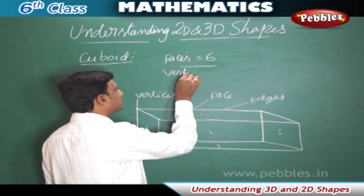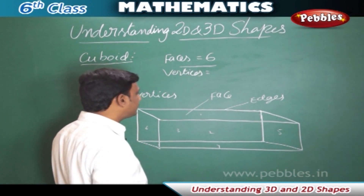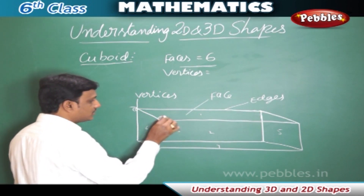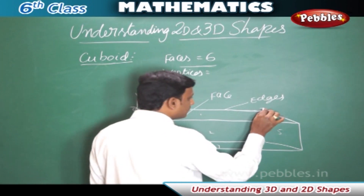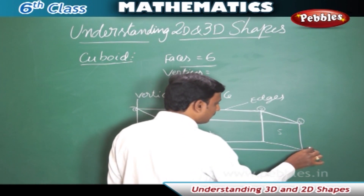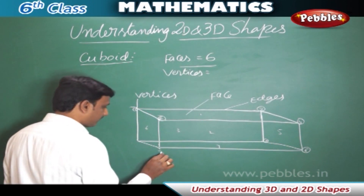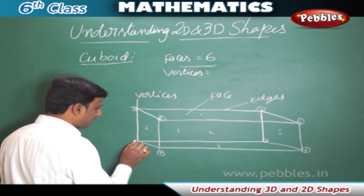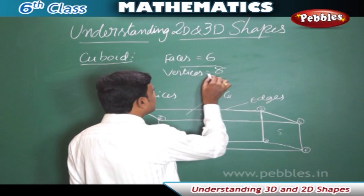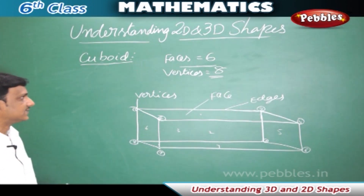Now let us count the vertices of a cuboid. Counting each corner point: 1, 2, 3, 4, 5, 6, 7, 8. So the total number of vertices a cuboid has is 8 vertices.